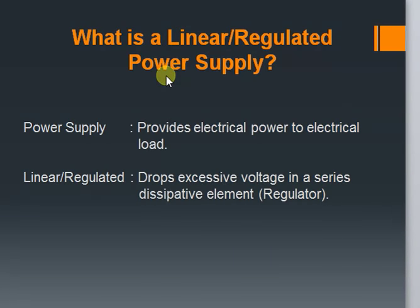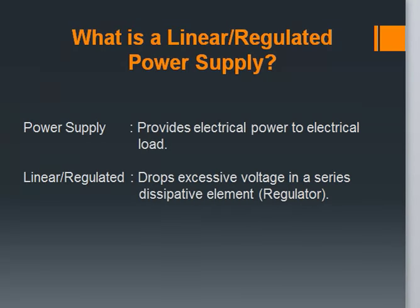Splitting the term into two parts, a power supply is a device which is used to provide electrical power to any electrical load. The term linear means that the excessive voltage in the device is dropped through a dissipative resistive element placed in series, which is a regulator IC in this case. From this we can conclude that a linear power supply is a device which gives a constant voltage to an electrical load by dissipating the excess voltage through the resistive element.